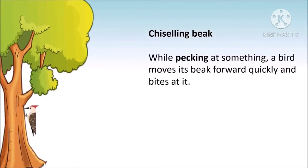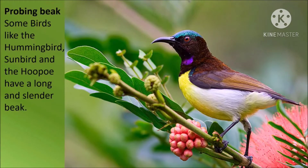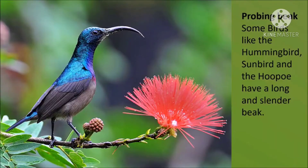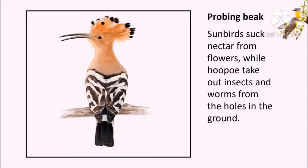Birds like woodpecker have a chiseling beak — a strong, long and straight beak. This helps them to peck at the wood and eat insects. While pecking, a bird moves its beak forward quickly and bites at it.